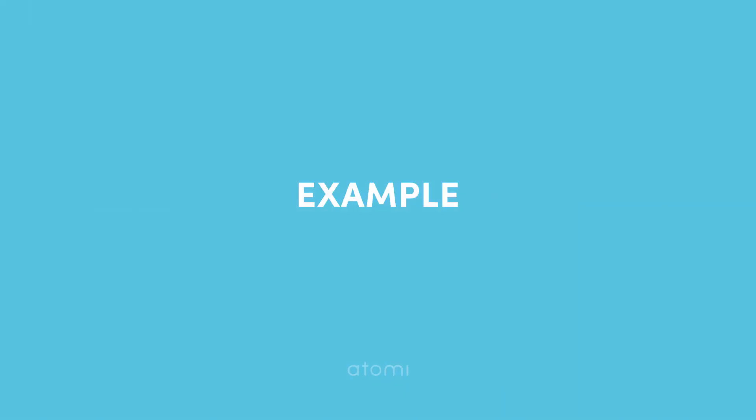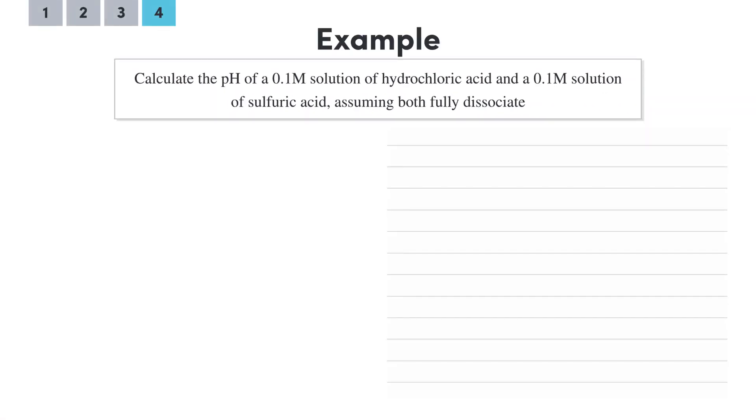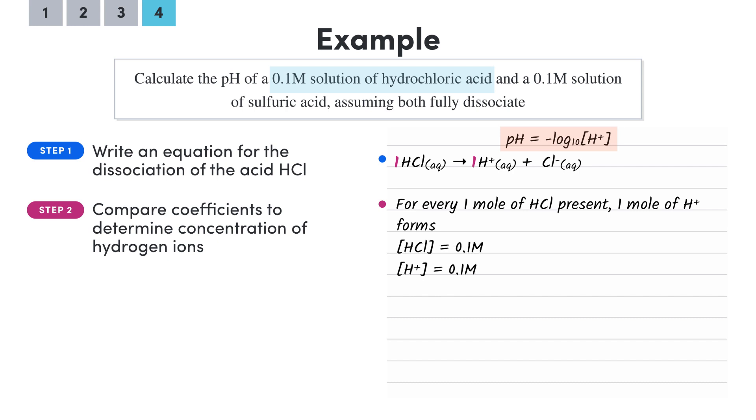Alright, so to finish up, let's run through an example which should also help explain some of the factors influencing the pH of an acid. Calculate the pH values of a 0.1 molar solution of hydrochloric acid and a 0.1 molar solution of sulfuric acid, assuming both fully dissociate. So looking at our formula, we know that we need the hydrogen ion concentrations, starting with our hydrochloric acid. We should know by now that we can write an equation for the complete dissociation of a strong acid like so, and looking at the 1 to 1 coefficients, we can see that for each mole of hydrochloric acid, we produce 1 mole of hydrogen ions. So the concentration of hydrogen ions will also be 0.1 molar.